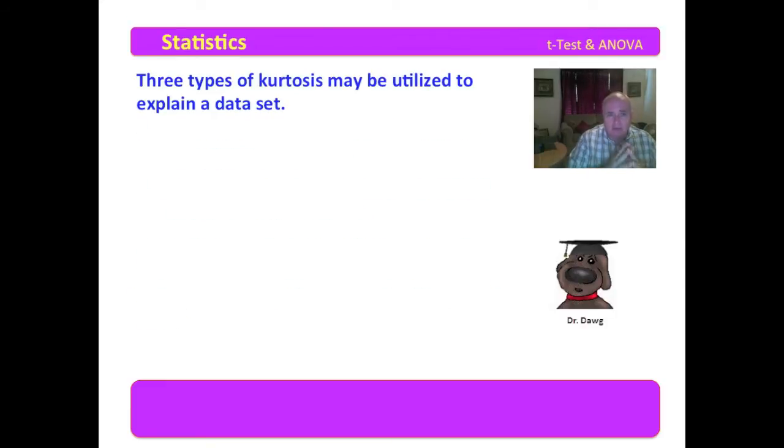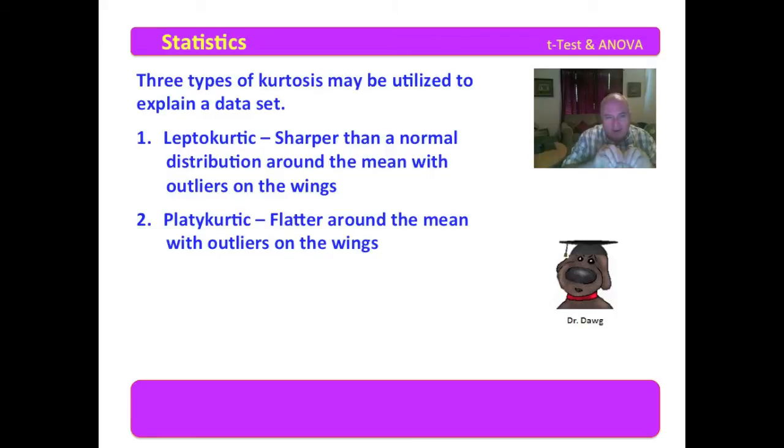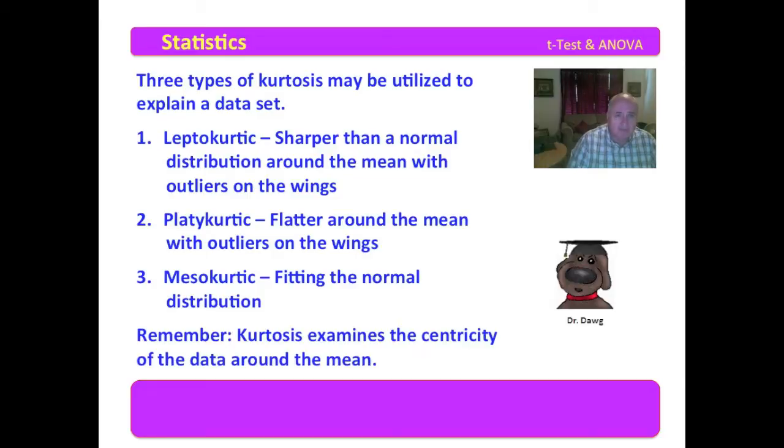Three types of kurtosis may be utilized to explain a data set. The first of these is leptokurtic, which means that the data really hit in the center and raise up real high around the mean and then they're spread out on the wings. That spreads the standard deviation, but it makes the data end too close to the mean with the outliers on the wings. The next one is platykurtic, which means it's flatter around the mean with outliers on the wings. And the one that you're actually looking for is mesokurtic, which means it fits the normal distribution. Now at least you panic, these terms you can use to impress your friends. But the neat thing is that a coefficient will tell us whether it's too sharp or whether it's too spread.